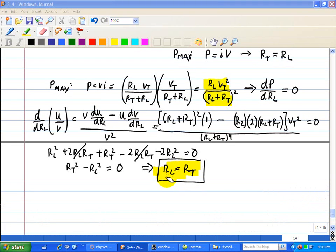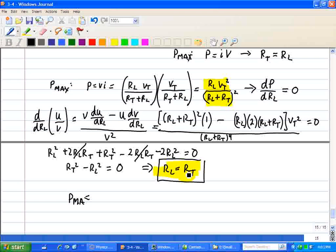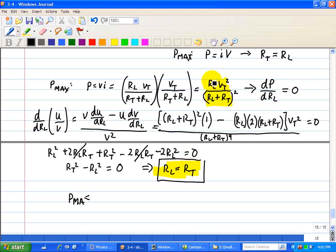So now we take our result, where RL is equal to RT, and we substitute in our maximum power equation. And that yields P max, when we substitute RL for RT here, we get RT VT squared over RL plus RT squared.